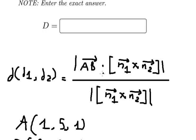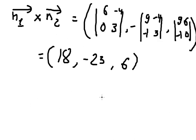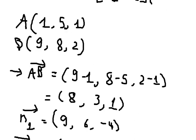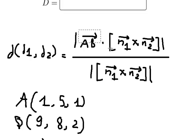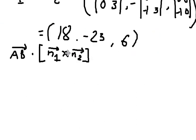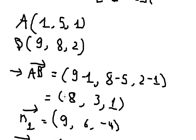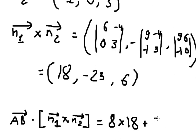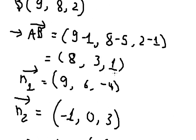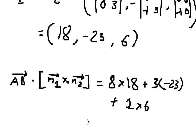Now we need to find the dot product between vector AB and the cross product. So we have 8 times 18, plus 3 times (-23), plus 1 times 6. We calculate this and get 81.